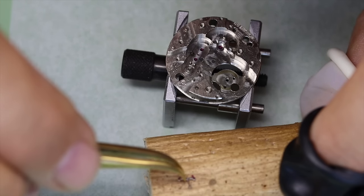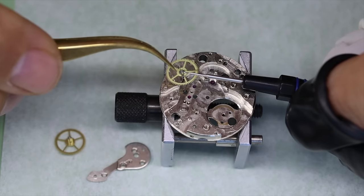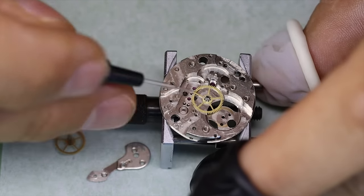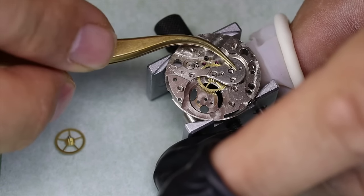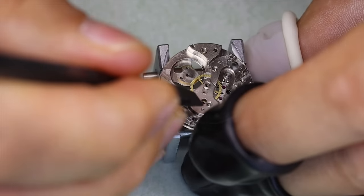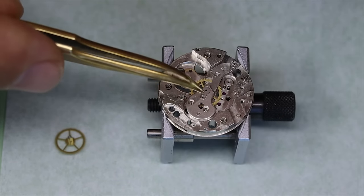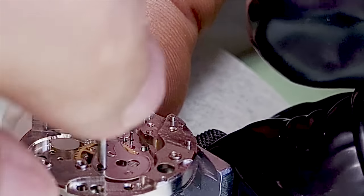We're epilaming the pallet fork and the escape wheel. And then we can start the reassembly. Now my apologies for the noise in the background. My colleague just got a few Casios in. And he says he's servicing them, but honestly, I think it's just about anger management.